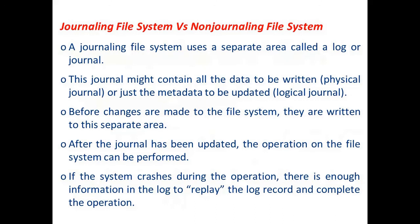A journaling file system uses a separate area called a log or journal — hence the name. The journal may contain all data to be written (physical journal) or just the metadata to be updated (logical journal). Before changes are made to the file system, they are recorded in this journal. After the journal has been updated, the operation on the file system can be performed.